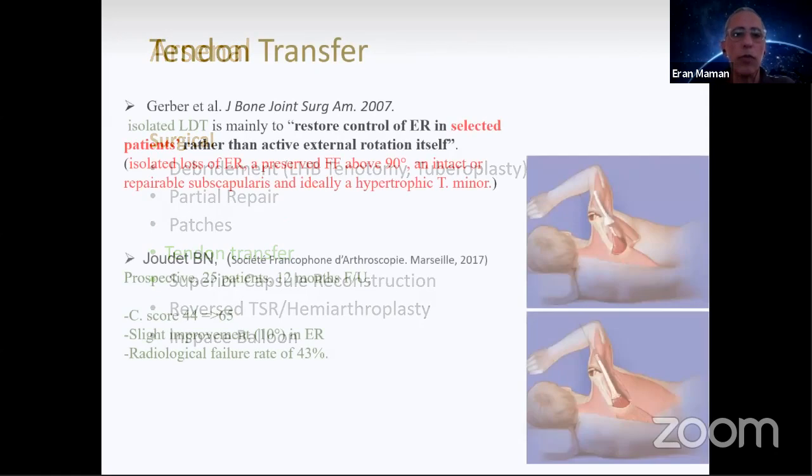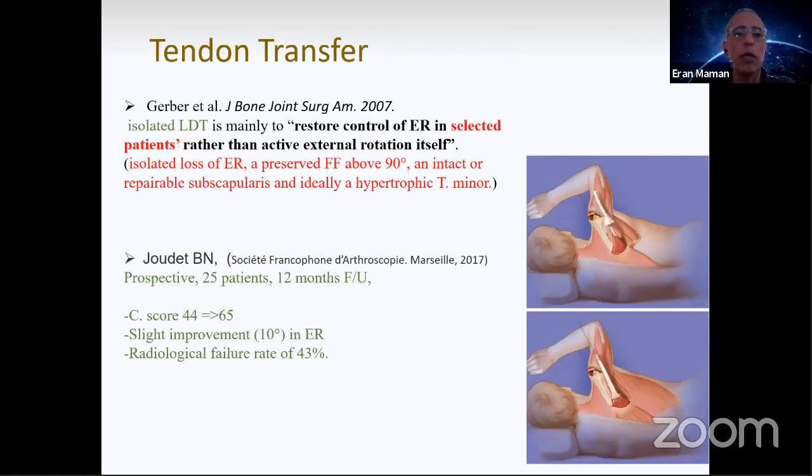What about tendon transfer? Gerber, JBJS 2007, said that isolated latissimus dorsi is mainly to restore control of external rotation in selected patients. Selected patients means they have only isolated loss of external rotation, preserved forward flexion above 90, and intact or repairable subscapularis, and ideally they have hypertrophic teres minor to compensate.